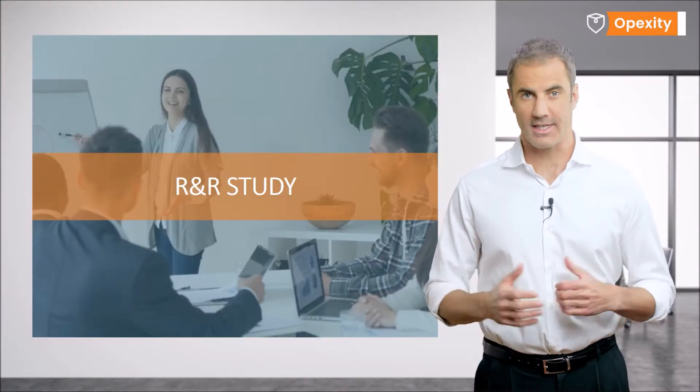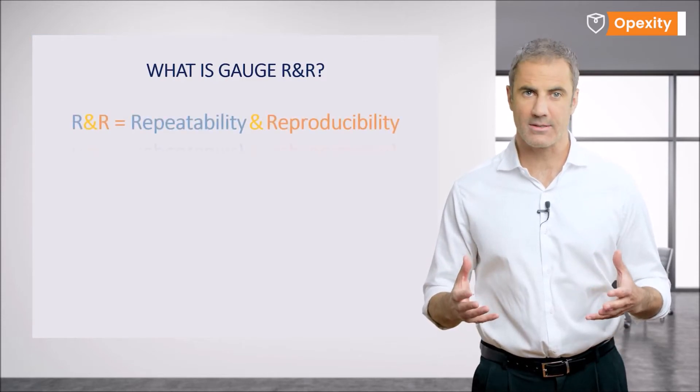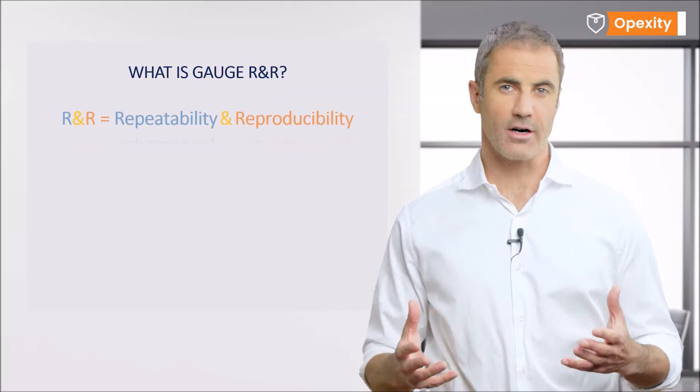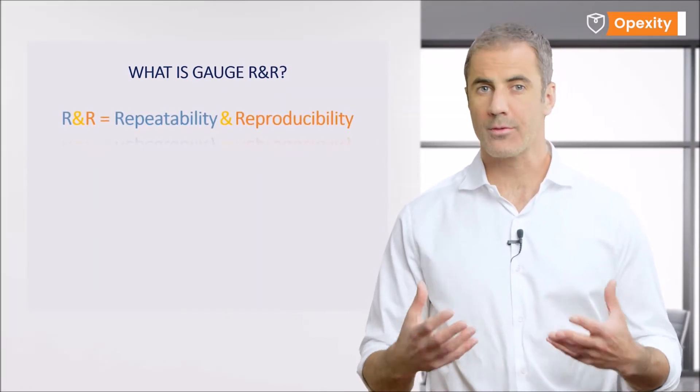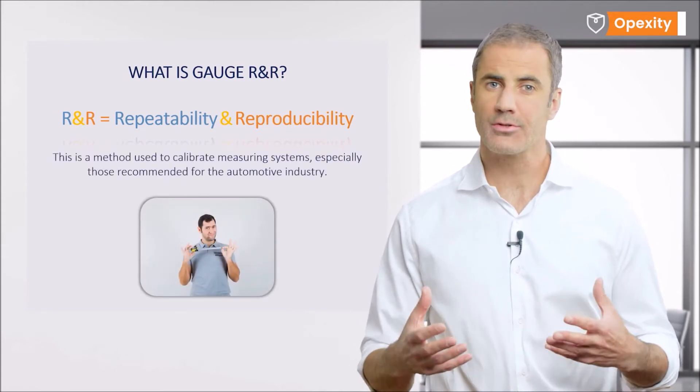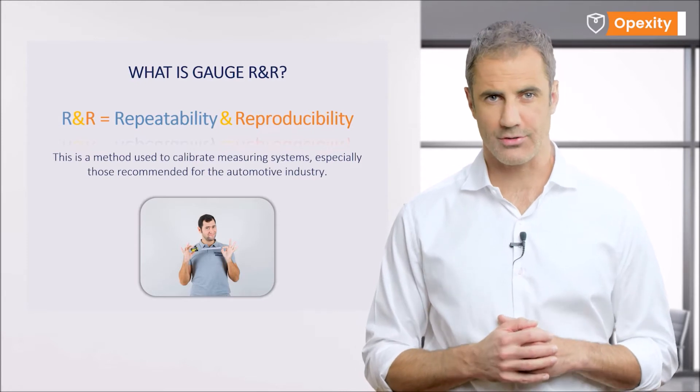Let's talk about gauge R&R study. This is the most popular method of analyzing a measurement system's capability within the MSA. Gauge R&R stands for gauge repeatability and reproducibility. This is a method used to calibrate measuring systems, especially those recommended for the automotive industry.